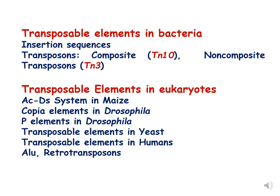Transposable elements present in eukaryotes include the Ac/Ds system discovered in maize by Barbara McClintock, copia elements in Drosophila, P elements in Drosophila, transposable elements in yeast, and LINE retrotransposons in humans. In this lecture we will be focusing on the Ac/Ds system in maize and IS elements and transposons in bacteria.